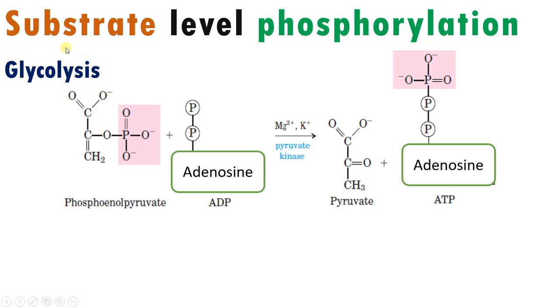Let's take an example to understand substrate level phosphorylation. This is the final step of glycolysis where phosphoenolpyruvate is converted to pyruvate.